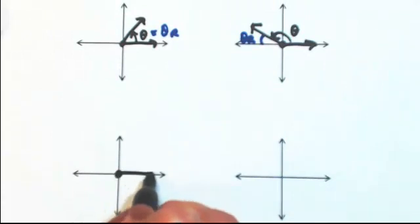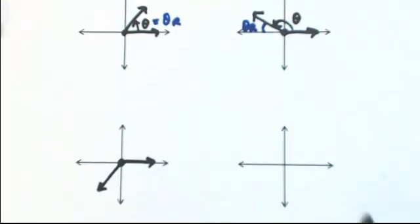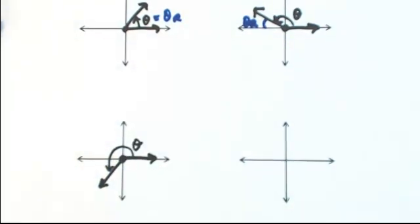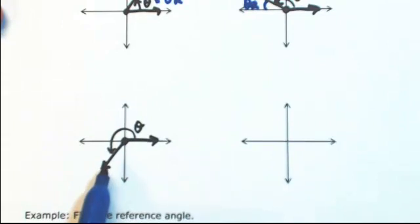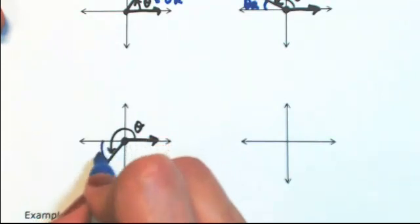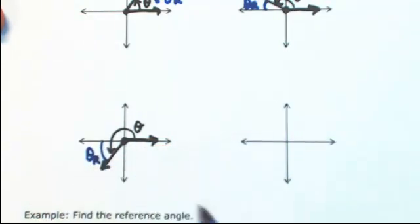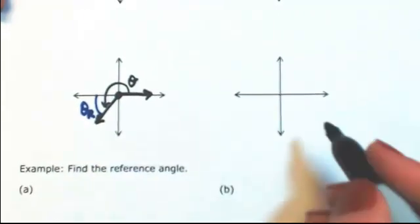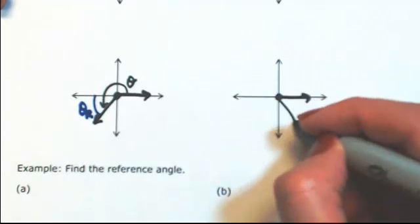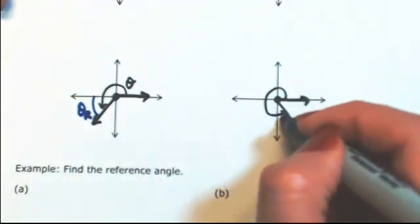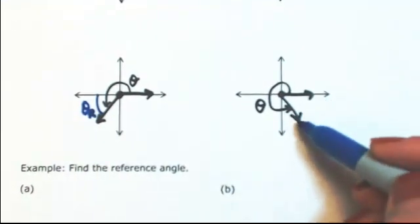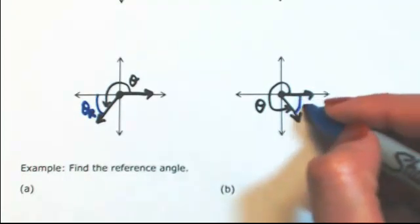Third quadrant: from the terminal side of theta back to the x-axis, either go back or go forward. Always make sure it's less than 90 degrees, so I'm going to go back. And for the fourth quadrant: from the terminal side of theta back to the x-axis, less than 90 degrees.